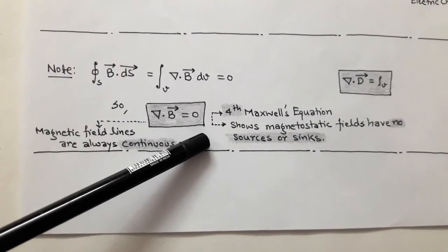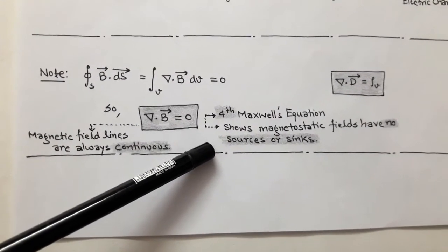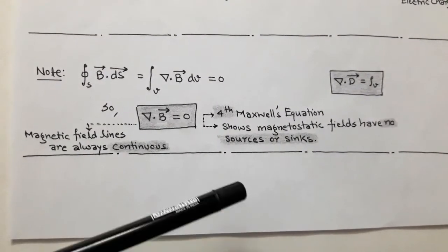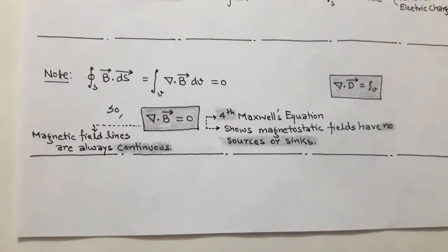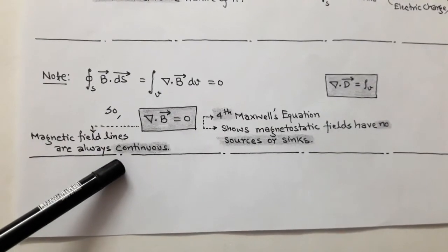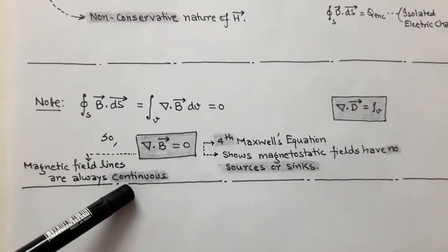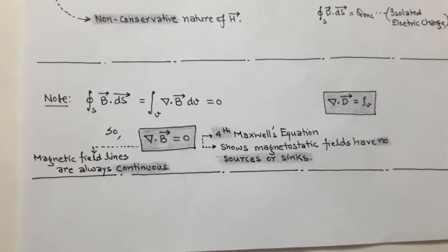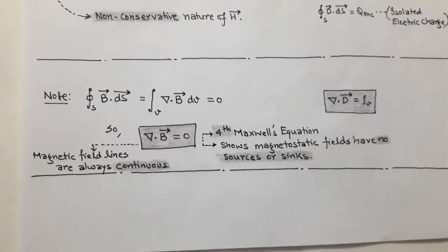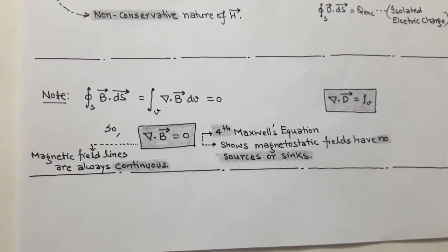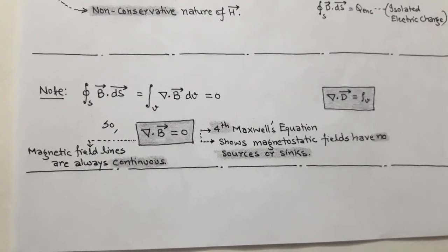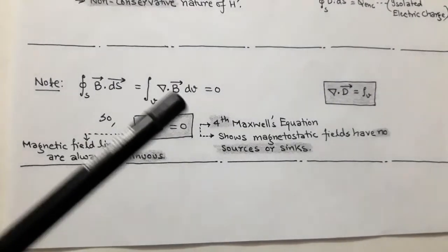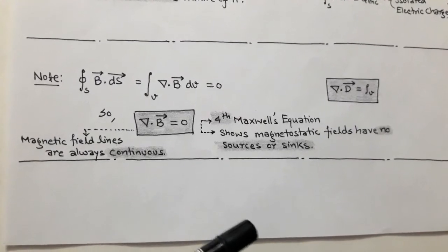The divergence of B equals 0 is the fourth Maxwell's equation. This equation shows that magnetostatic fields have no source or sink — meaning there is no divergence of magnetostatic fields, no beginning or end; the magnetic field lines are always continuous. In the case of electrostatic fields, the divergence of D equals the volume charge density ρᵥ. The divergence of magnetic flux density B being equal to 0 means that since there is no isolated magnetic charge, there is no beginning or end of magnetic flux lines — they are always continuous.